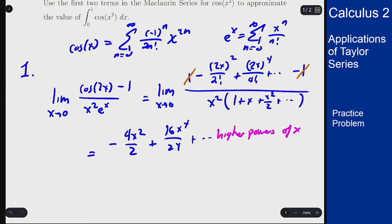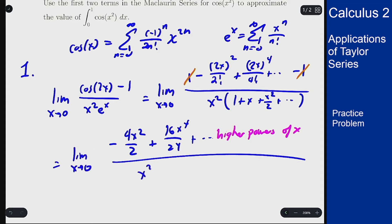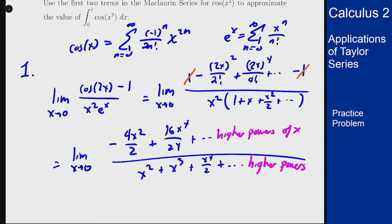This is all still a limit as x → 0. On the bottom I have x² + x³ + x⁴/2 plus higher powers of x.